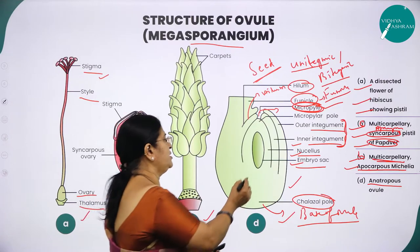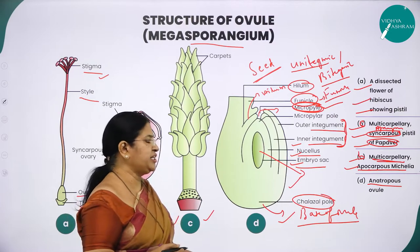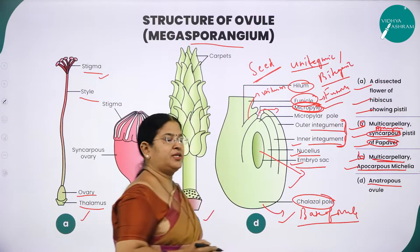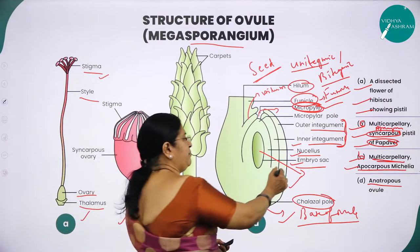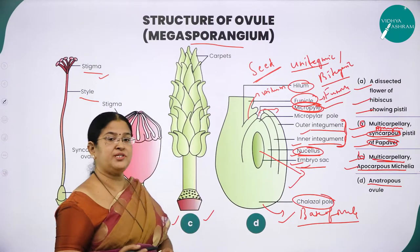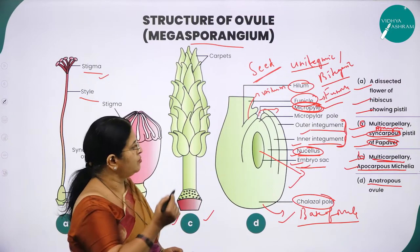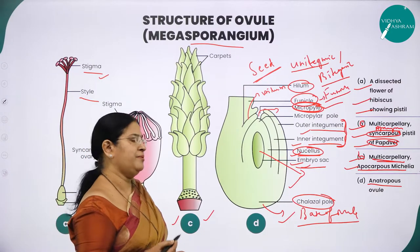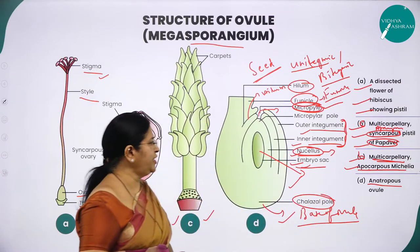Very important is the nucellus. Nucellus is nothing but a nourishing tissue formed between the embryo sac and the integuments. It is a sporogenous tissue, and the cells of the nucellus contain abundant reserve food material.